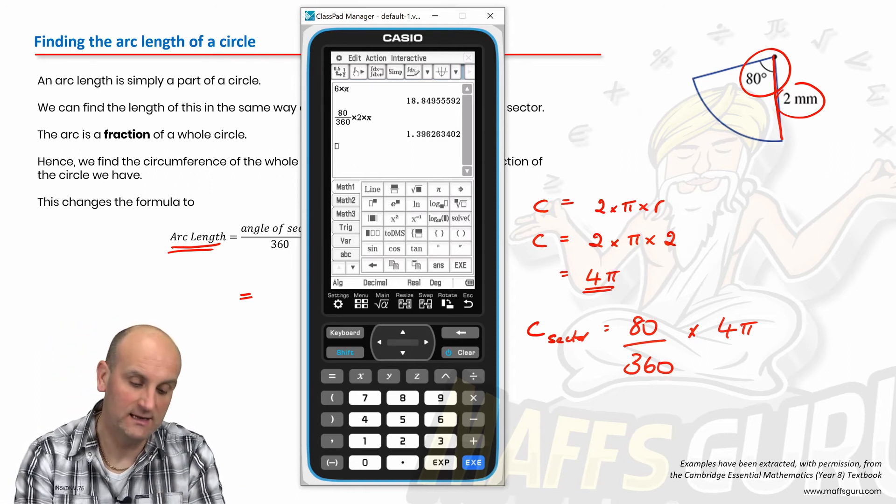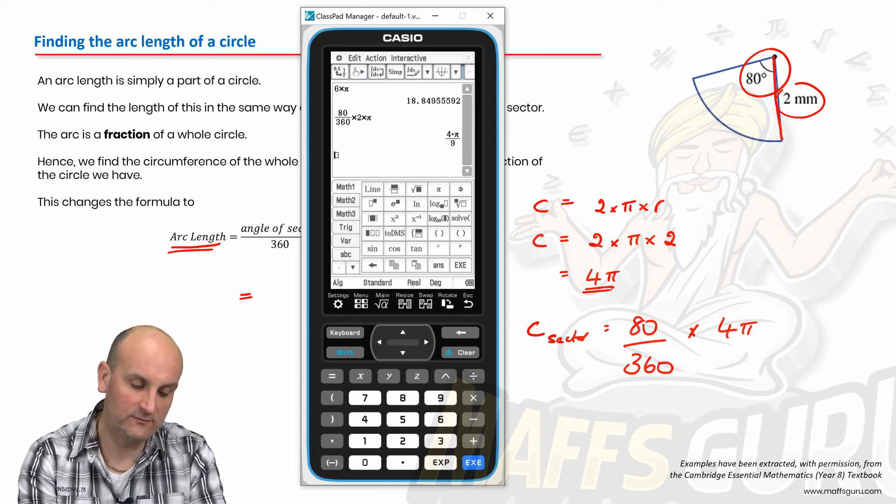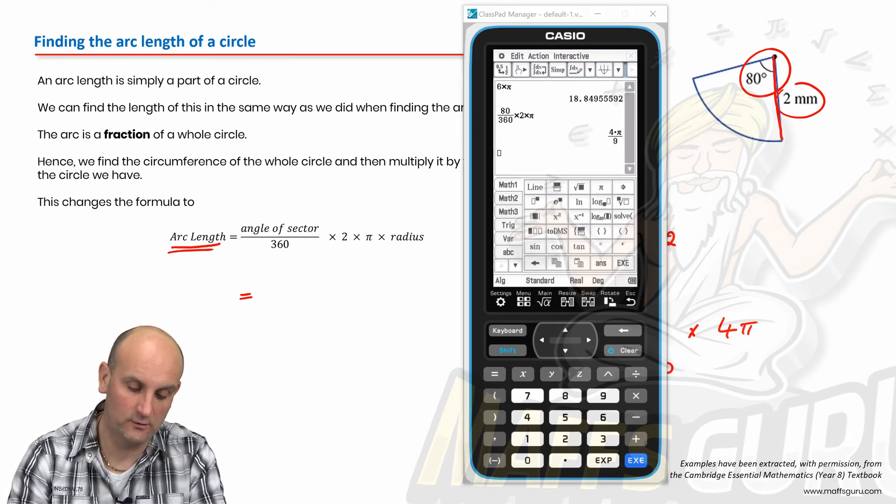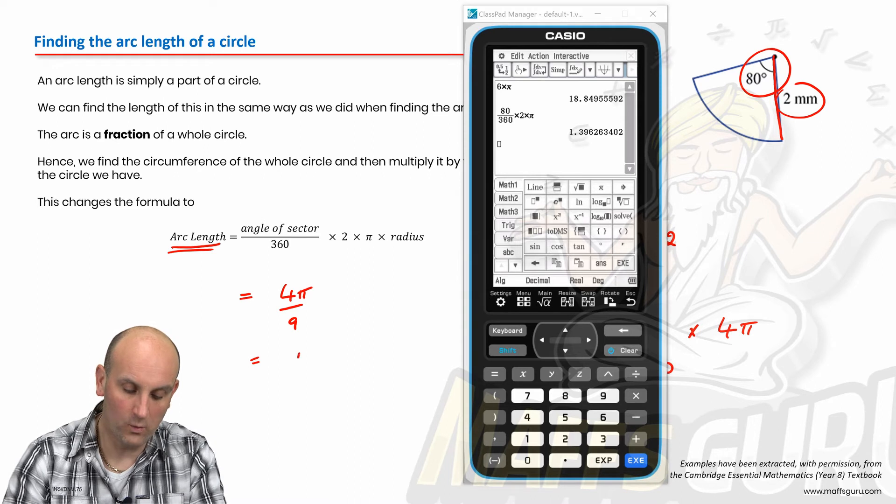All right, so let's use my fraction button on my calculator. 80 on 360. I'm going to times that by 2 times pi. Hit enter. And what we notice is I have a decimal value. Now, the great thing about this calculator is I can put this and change decimal to standard, and hit enter, and it gives me my answer as an exact value as well.